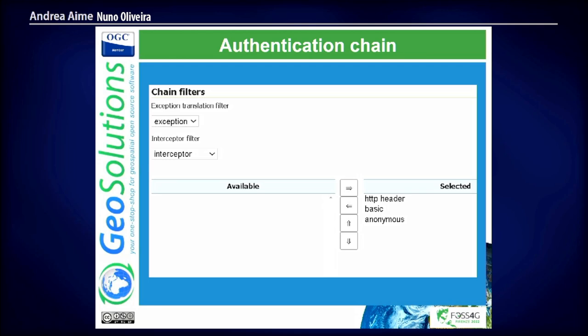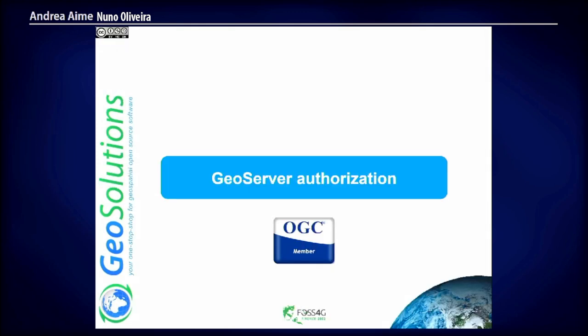So far we saw: authentication filter extracts information, provider uses that information, and the authentication chain binds all of this together. When you are configuring these components, we need to be extra careful — because if we misconfigure the authentication chain for the web, we are locked out of the server. So, one step at a time.